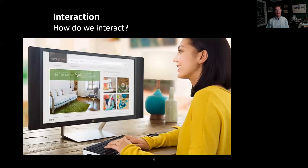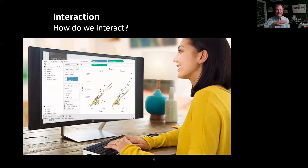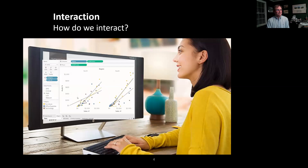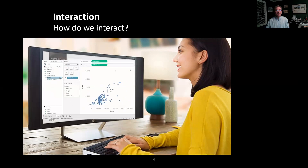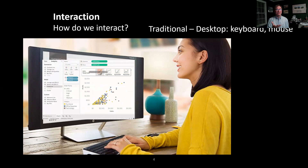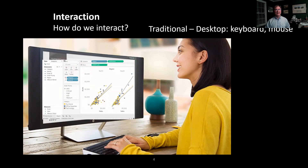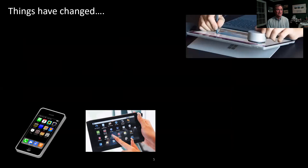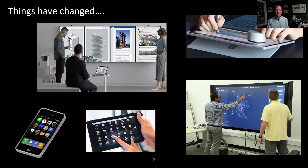A second question is: how do we interact? Most of us have desktop computers or laptops — I'm superimposing Tableau here. Until recently, in traditional means, we used a desktop with a keyboard and mouse and clicked on things. But things have changed in the last five to ten years. Now we have computers that are small, like phones and tablets, and we have big ones on walls. This really requires new forms and new styles of interaction, and that's a lot of what my talk today is about.